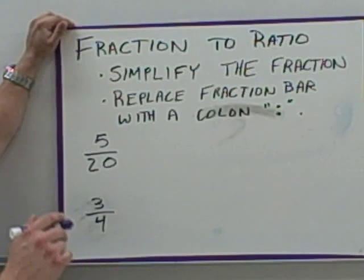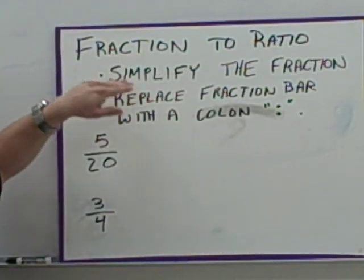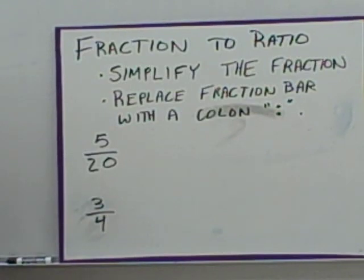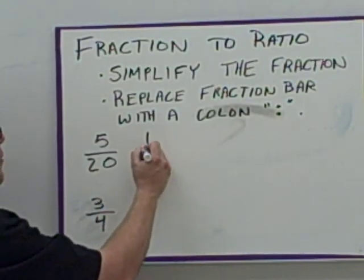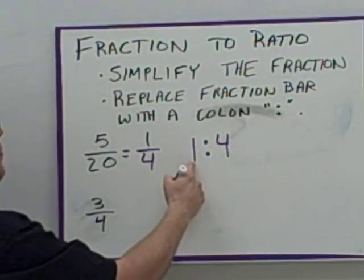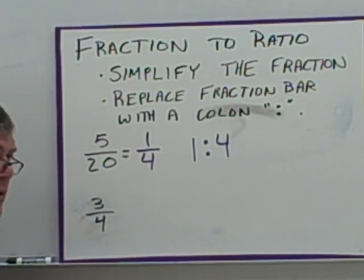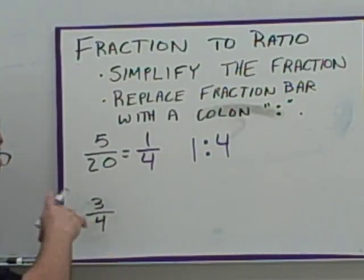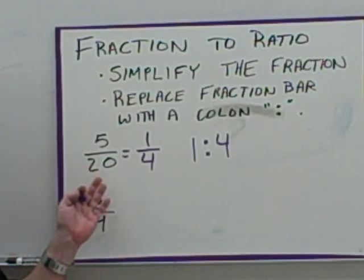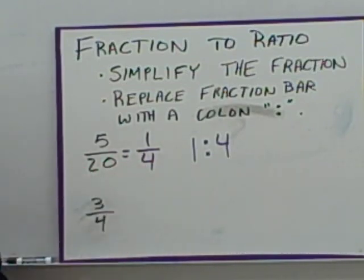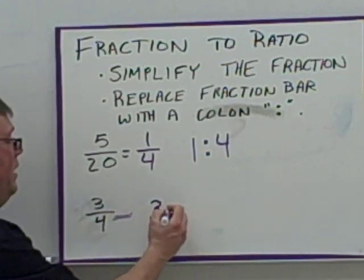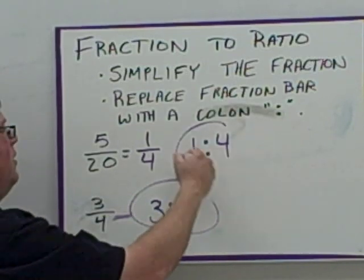Fractions to ratios: when converting from a fraction to a ratio, first simplify the fraction, then replace the fraction bar with a colon. So here I divide both by 5 to get 1 over 4, then replace the fraction bar with a colon — top number in front, bottom number second: 1 colon 4. Here we have 3 fourths, which doesn't need reducing, so it's just 3 colon 4.